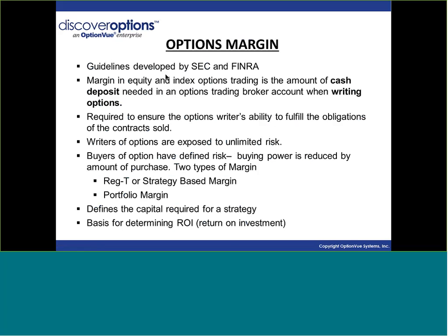Options margin are guidelines developed by the SEC and FINRA, and they change at times. Last October they changed the reg T requirements for a broken wing butterfly — actually any unbalanced strategy, whether it's a butterfly, iron condor, or iron butterfly. Historically they added both sides together and subtracted the credit; now they just look at the biggest side and subtract the credit. Basically a butterfly and an iron butterfly have the same risk and the same graph, but prior to this an iron butterfly quite often had twice the margin requirement of a butterfly, and therefore half the rate of return.